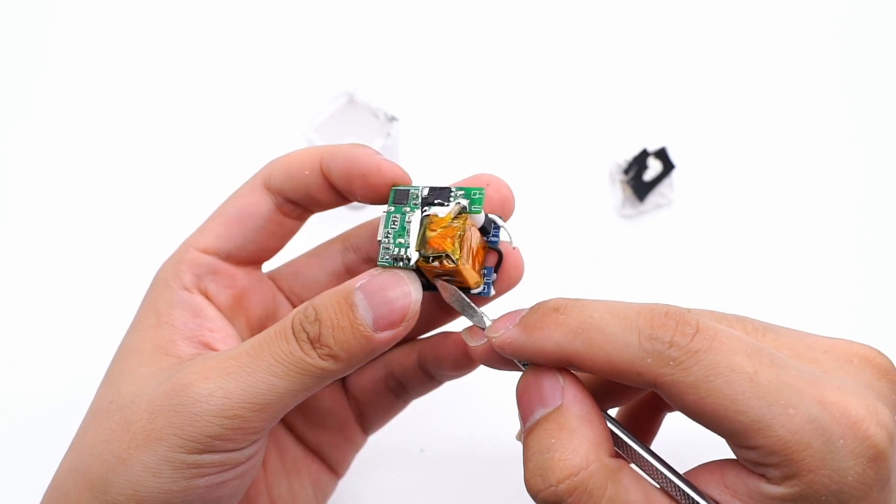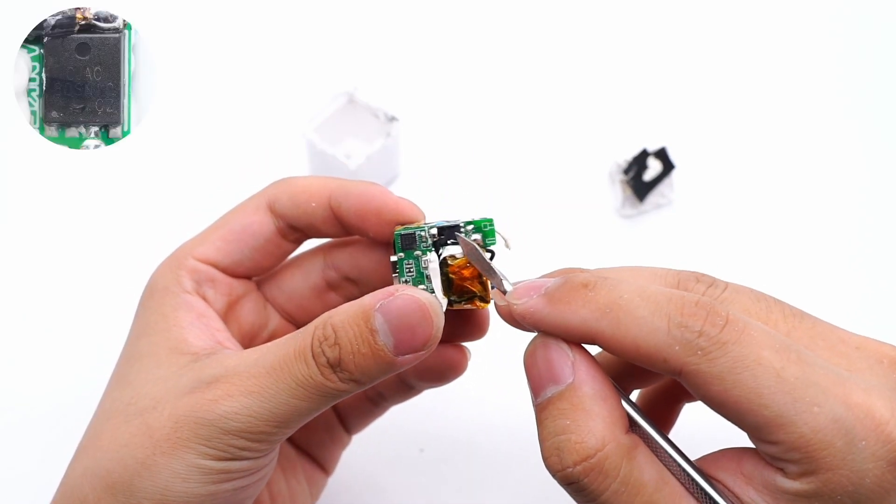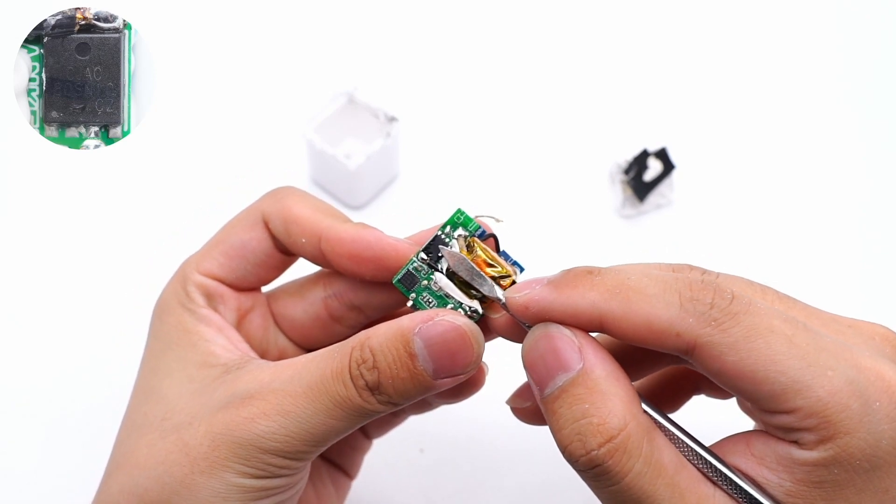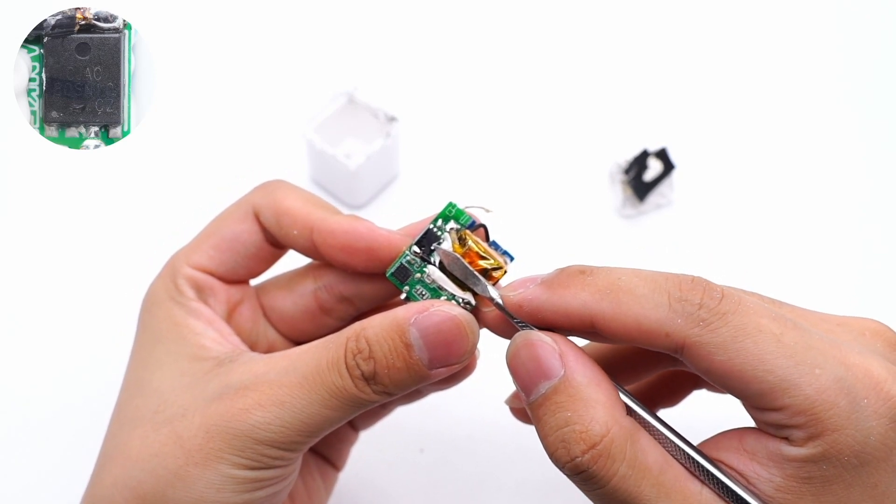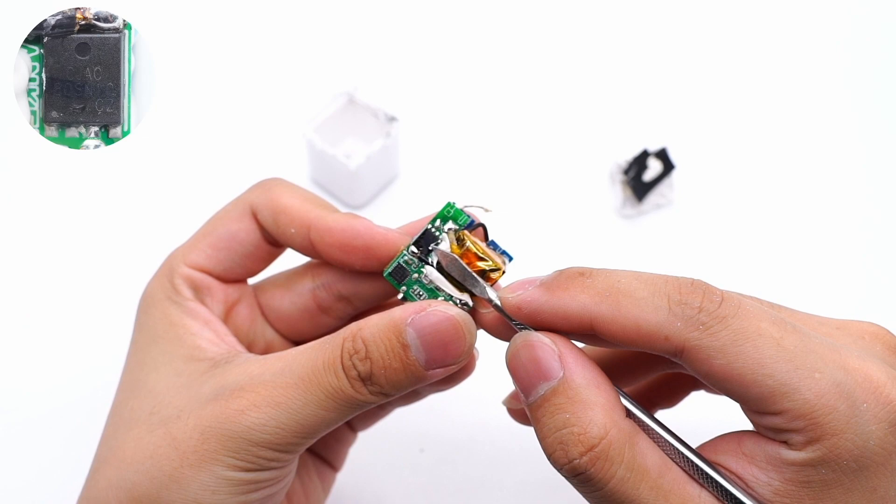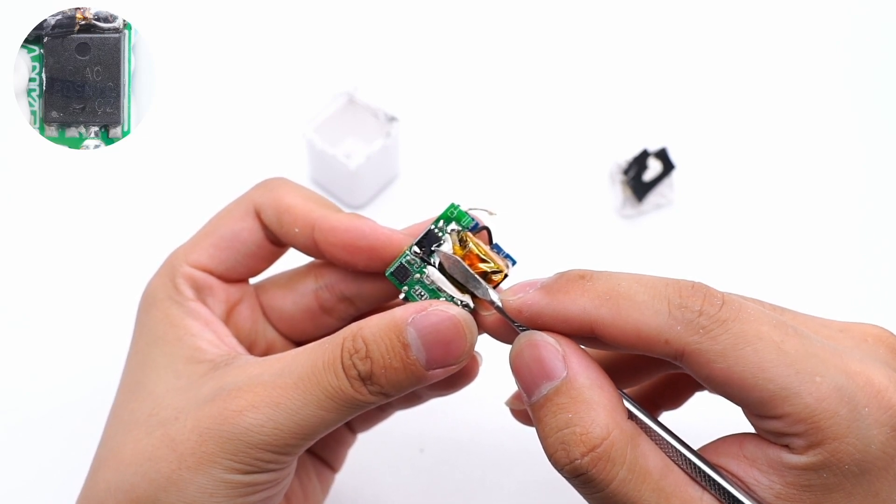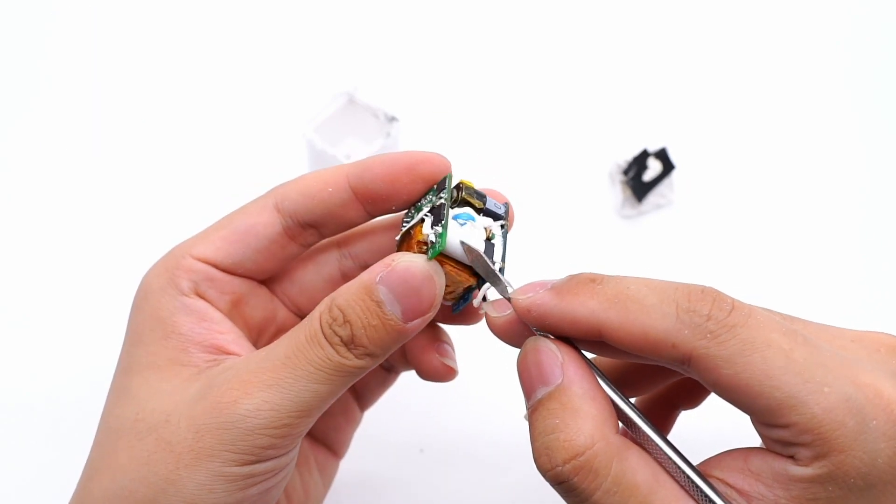This is a transformer, tightly wrapped with tape. Here is the synchronous rectifier MOSFET, packaged by PDFN5x6. Withstand voltage is 100V and resistance is 8.8mΩ. This is differential-mode inductor.